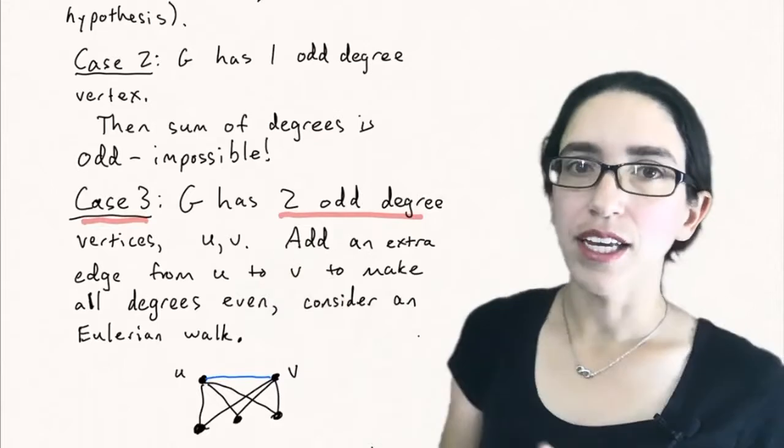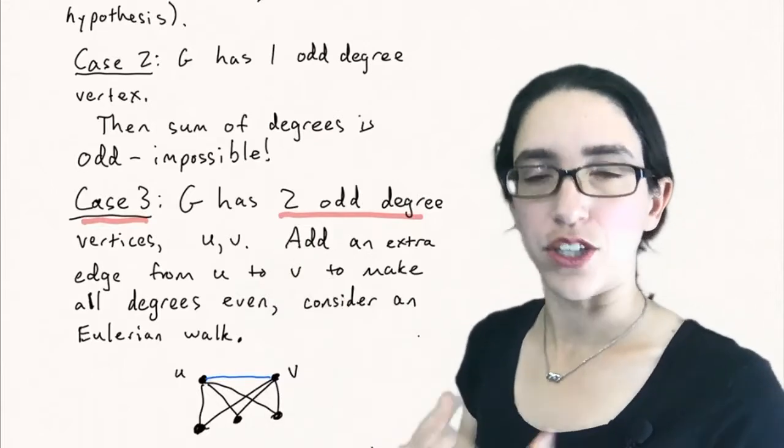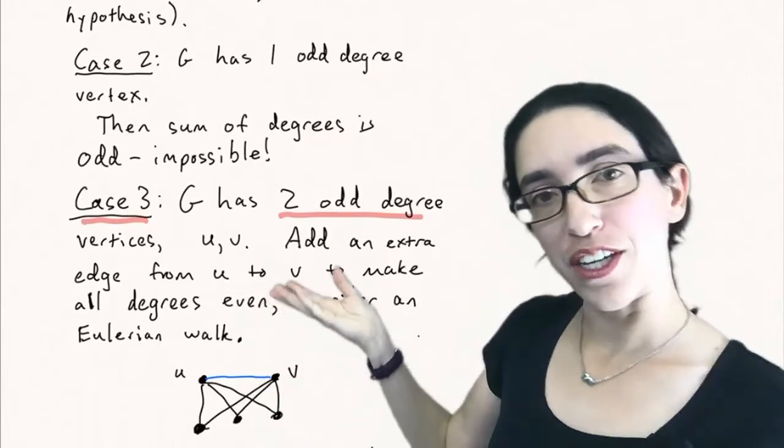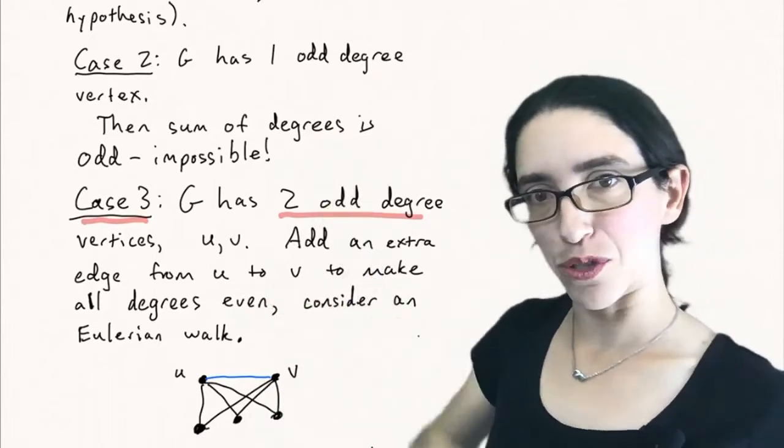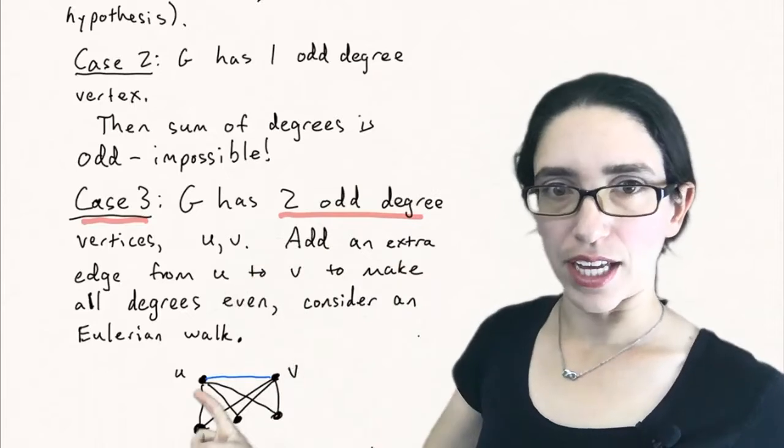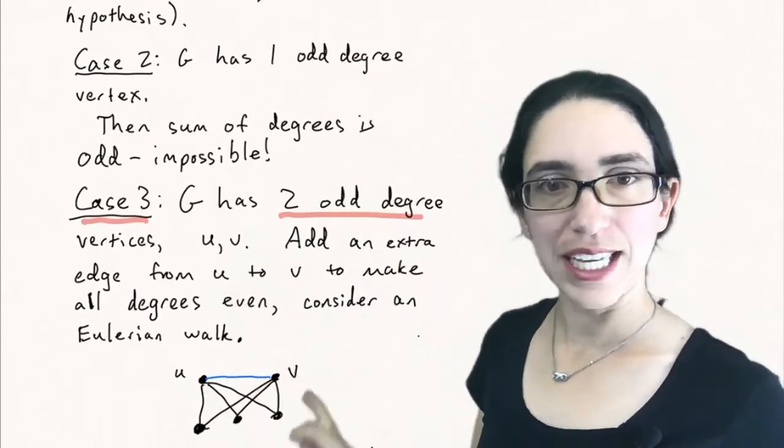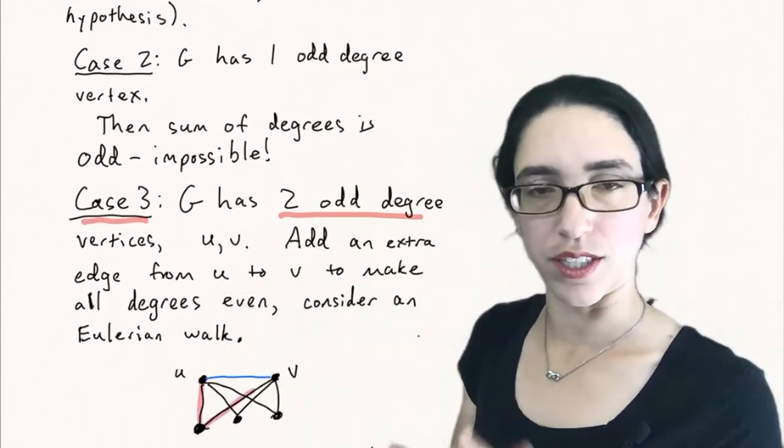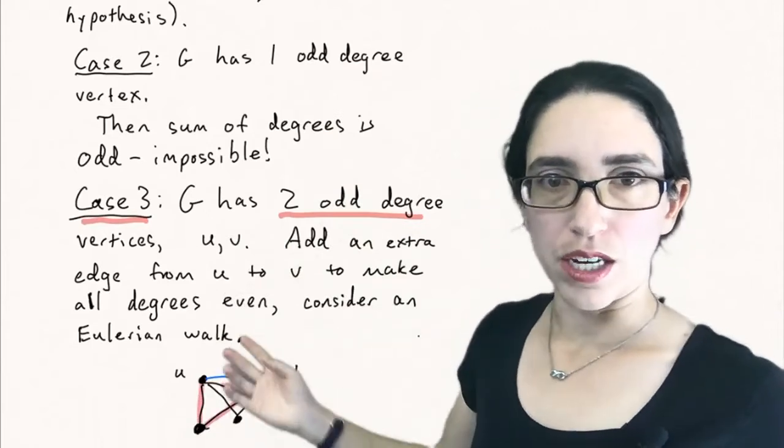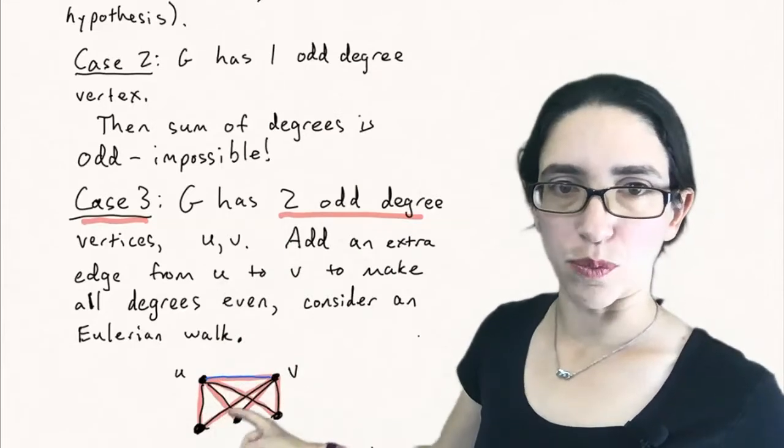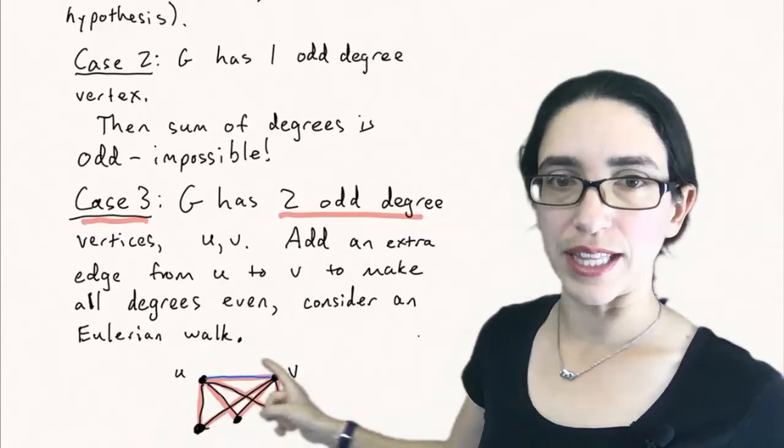So case three is when G has two odd degree vertices, U and V. Now the trick is we can use case one, which we already proved, to prove case three. The trick is to add an extra edge from U to V to make all the degrees even, possibly doubling an edge if you already had it. So we're not considering simple graphs here.